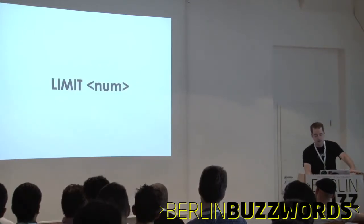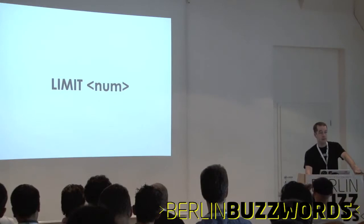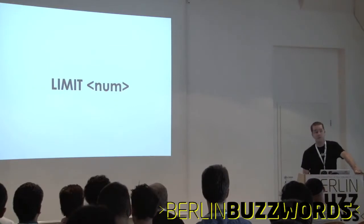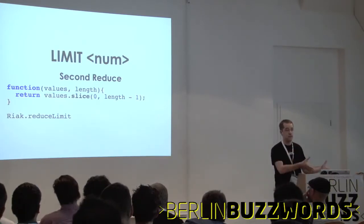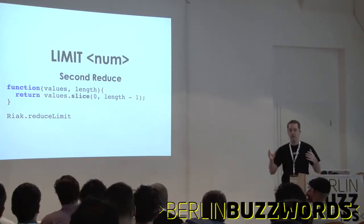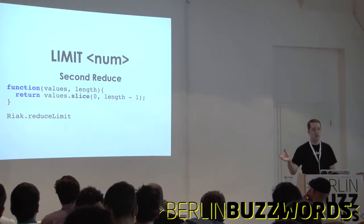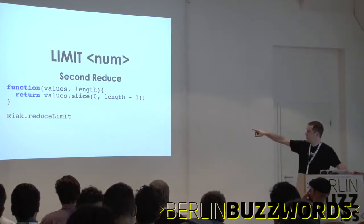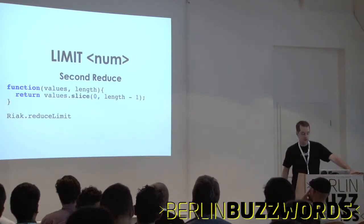LIMIT is trickier because reduce may be applied multiple times, so you don't know if you have the full result set each time. The solution is to make the limit the second reduce function — first a sort function collects all results in order, then you pass to the limit function, which receives the full set. It takes the values and slices the array given the length as the phase argument. There's a built-in function called riak.reduceLimit.